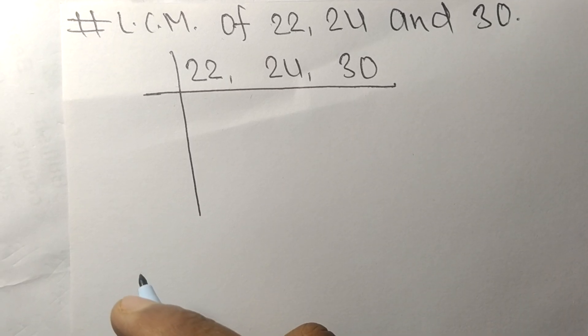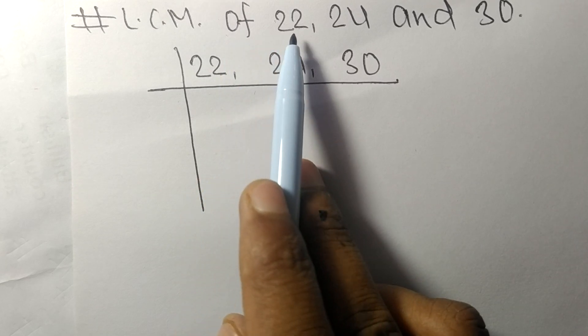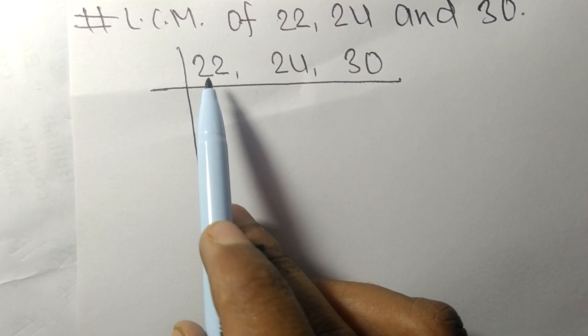Today in this video we shall learn to find the LCM of 22, 24, and 30. These numbers are all divisible by 2.